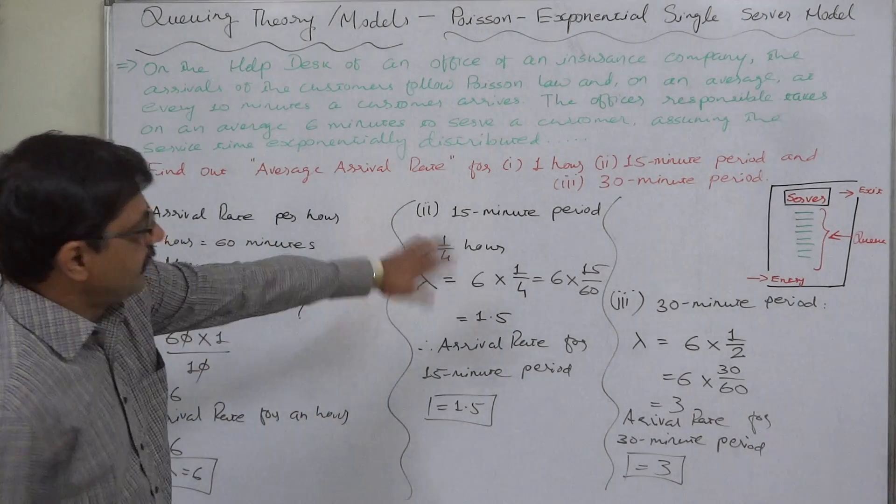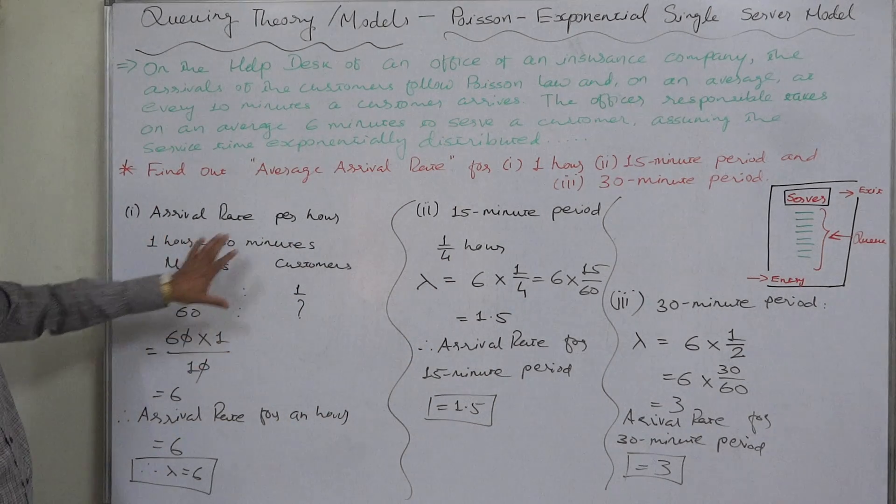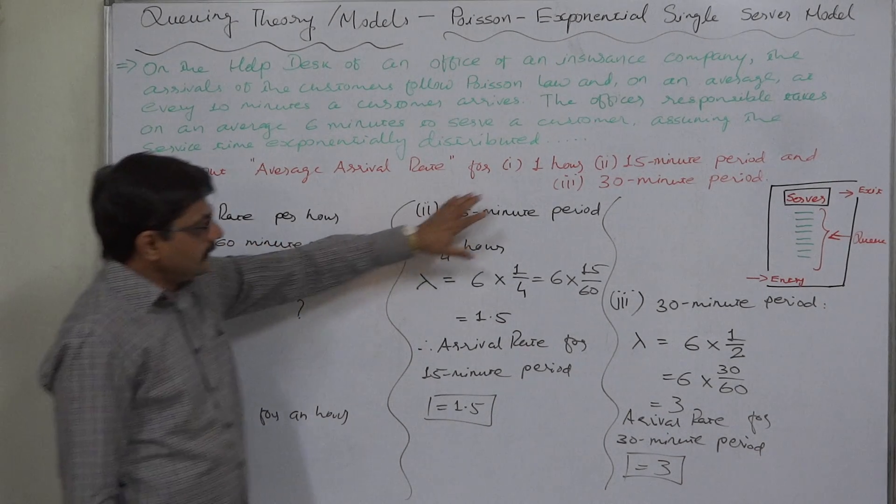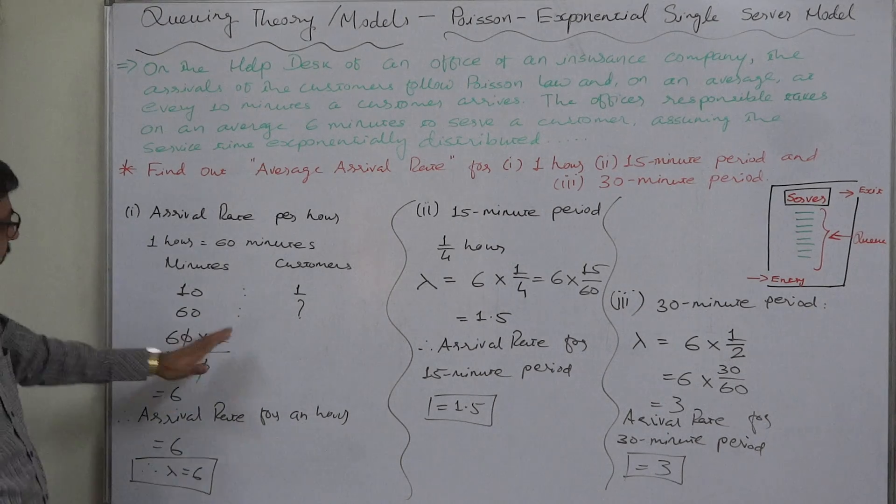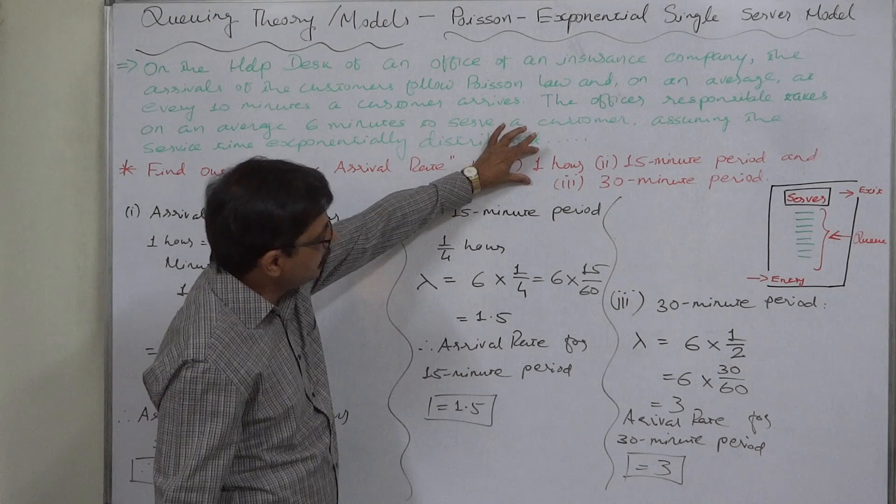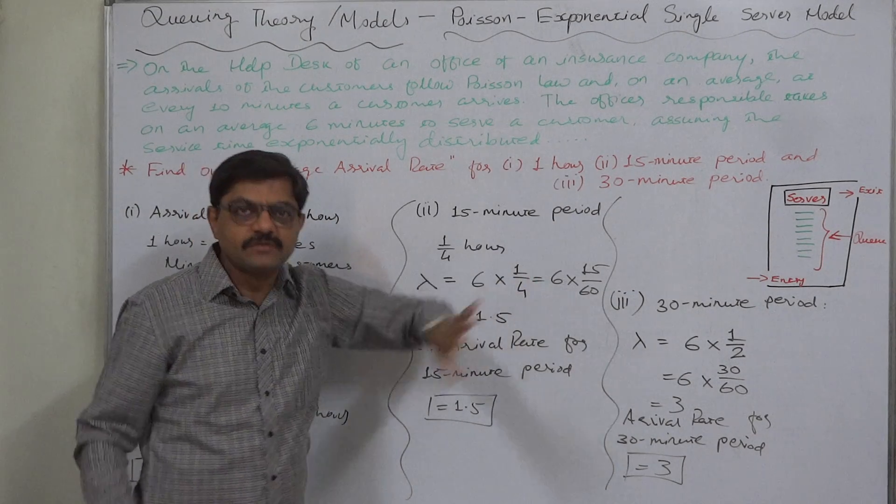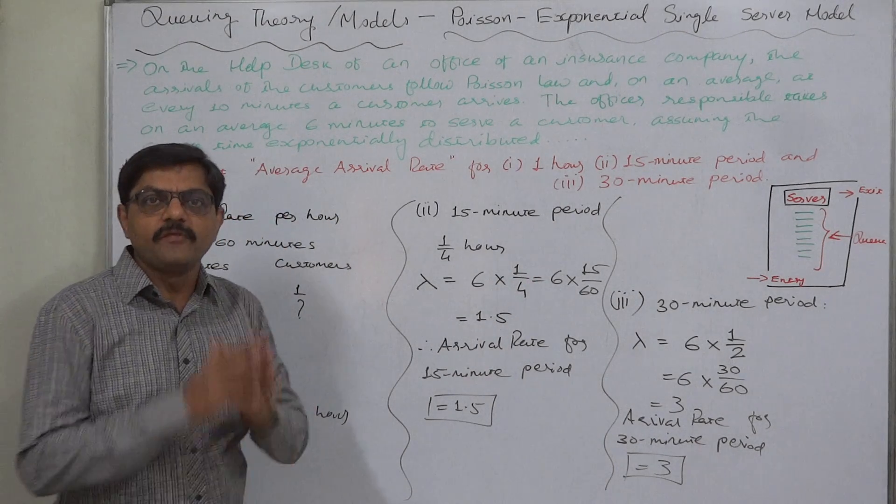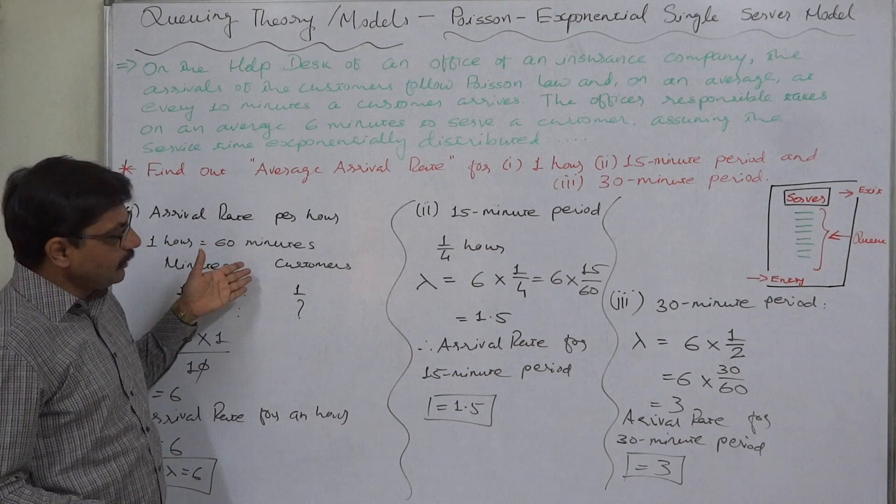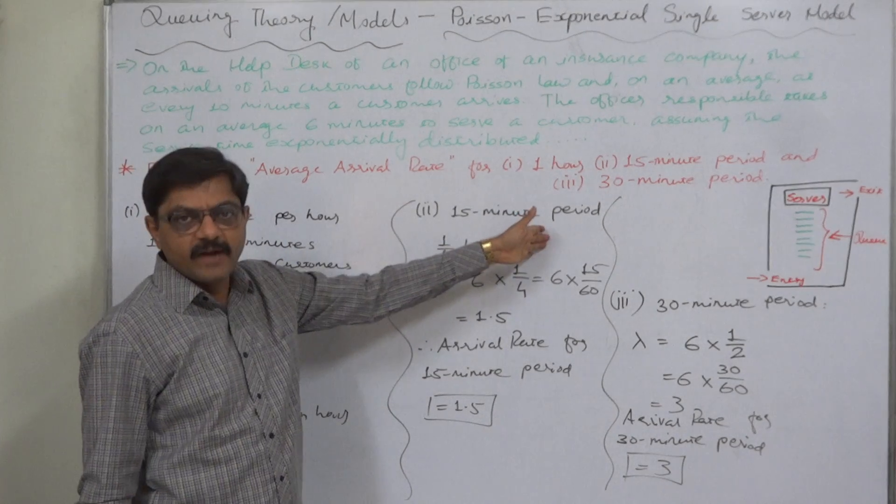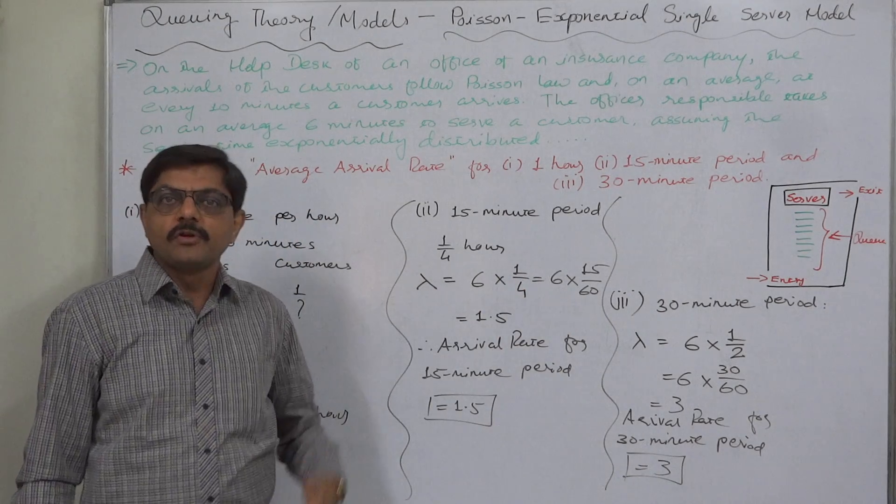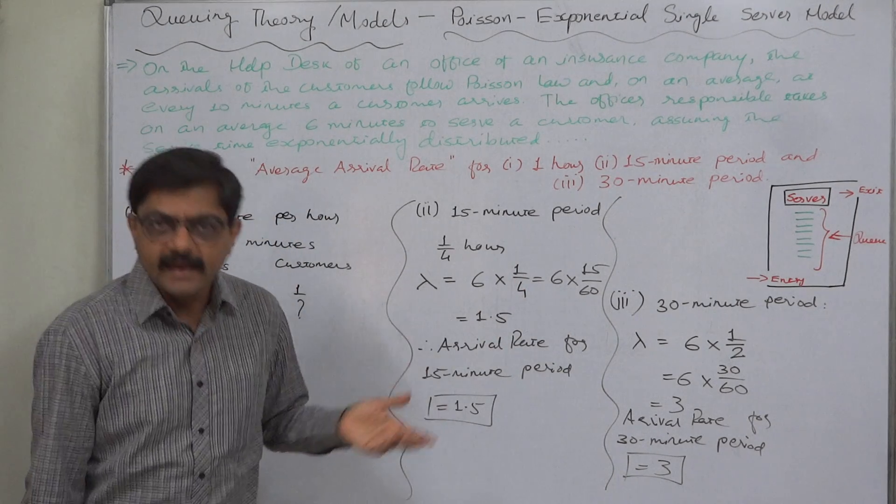So it is very simple to find out the arrival rate, but we just need to interpret the data in its correct way. Again I repeat, it is advisable to find out the arrival rate for a standard period of time like 1 hour, on the basis of which we can calculate arrival rate of any other time period. On the basis of arrival rate of 1 hour or 60 minutes we could easily find the arrival rate for 15 minutes or 30 minutes, or we can find out the arrival rate for the whole shift of 8, 9, 10 or 12 hours, whatever the case may be.